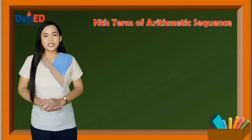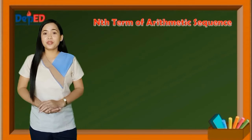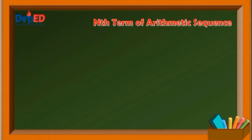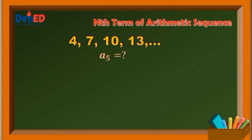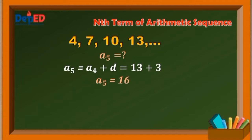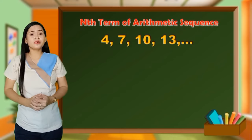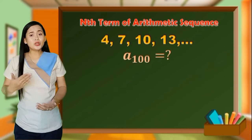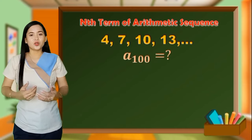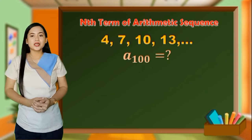Now that you can already distinguish an arithmetic sequence through its common difference, you can now easily find the next few terms. Going back to the arithmetic sequence 4, 7, 10, 13, and so on, what is the fifth term? The fifth term is 16. Just simply add the common difference to the fourth term. So 13 plus 3 is equal to 16. The next two terms are 19 and 22. But what if I will say find the 100th term of this sequence? You can continue the process of adding the common difference until you reach the 100th term, but that will be a long process and time consuming.